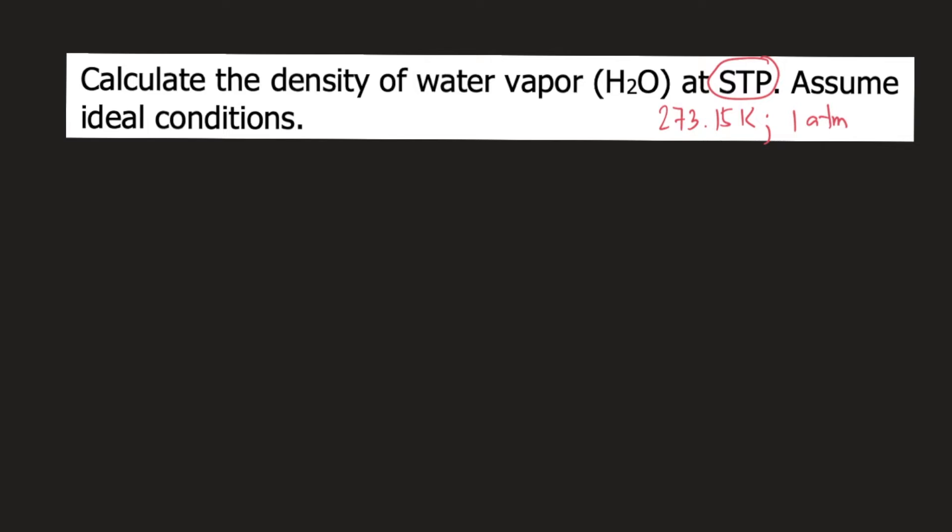If you want to compute the density of an ideal gas, the formula for density is MP over RT. M stands for the molar mass, P stands for pressure, R is the gas constant, and T is temperature.